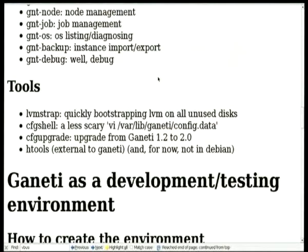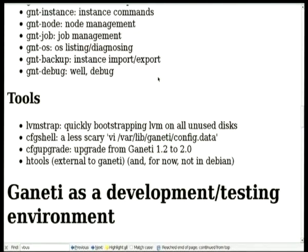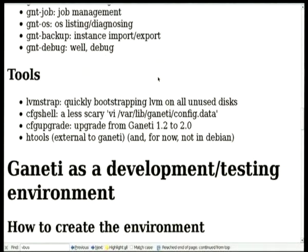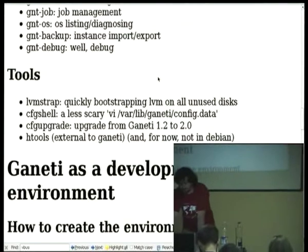We have some tools — mostly things we use internally which we thought were handy, so we're just shipping them with the rest of the source. LVM-strap is used if you have a node with many disks to bootstrap an LVM block device dedicated to instances. GntBackup expects in 2.0 that its block device is dedicated to instances rather than the system LVM volume group. CFG shell is basically a way to edit config data — just use VI. CFG upgraded is used to upgrade from 1.2 to 2.0. Hopefully we won't need it for 2.1, but it's too early to know.